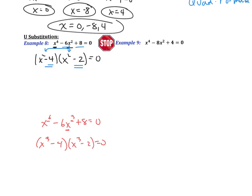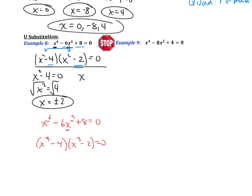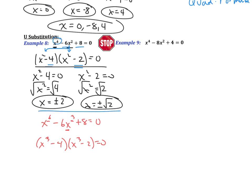Now we can use the zero product property. For x squared minus 4 equals zero: x squared equals 4, and since I'm doing an even root I need plus or minus — so x equals plus or minus 2. For x squared minus 2 equals zero: x squared equals 2, take the square root of both sides, and x equals plus or minus the square root of 2. Notice there are four solutions here, and we said there was a possibility of having 4.